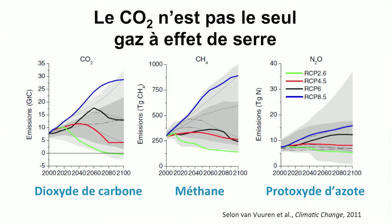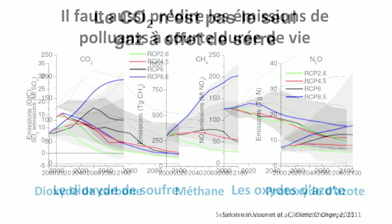Carbon dioxide is not the only greenhouse gas that we need to make predictions on. We also look at scenarios for other greenhouse gases, especially methane (CH4) and nitrous oxide (N2O), shown in the picture. The gray areas try to surround all of the possible future scenarios, with and without emission mitigation policies being implemented.